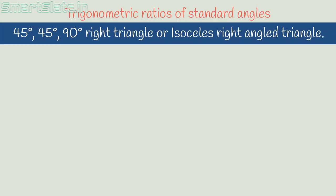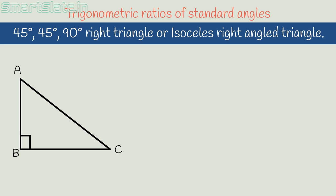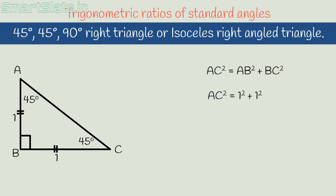First, we will find the value of trigonometric ratios when theta is 45°. Consider right-angled triangle ABC, right-angled at B, with acute angles of 45° each — making it an isosceles triangle. Let AB and BC each equal 1 unit. By Pythagoras theorem, AC² = AB² + BC² = 1² + 1² = 2, so AC = √2. Now we have the values of all sides and can find the trigonometric ratios.